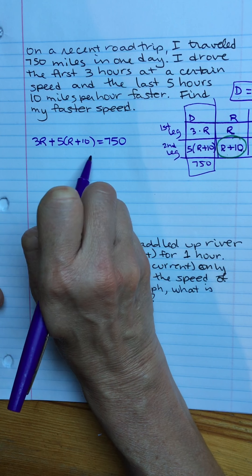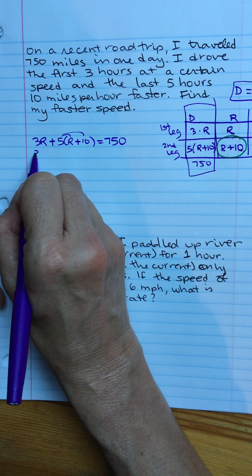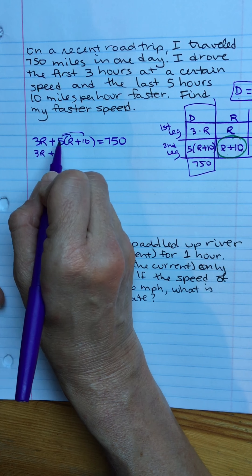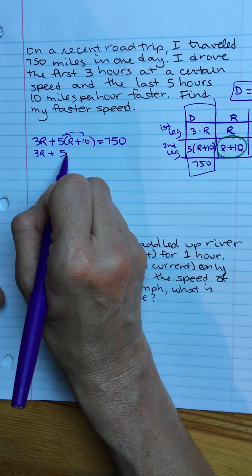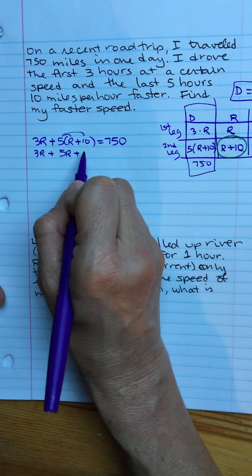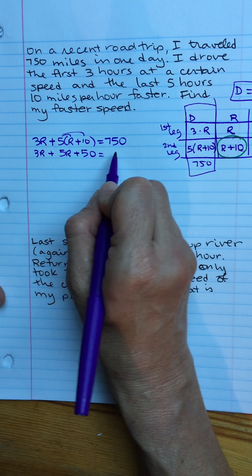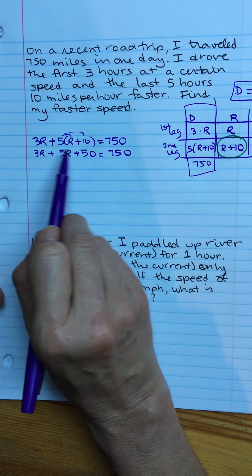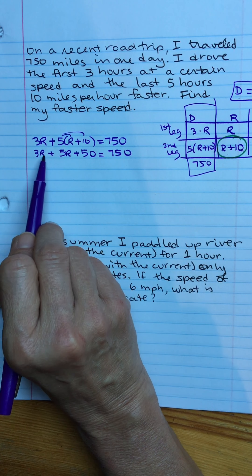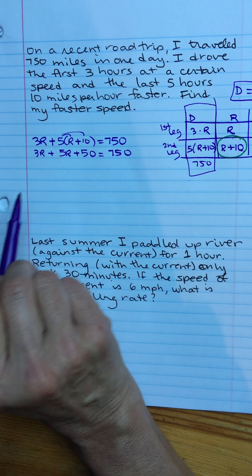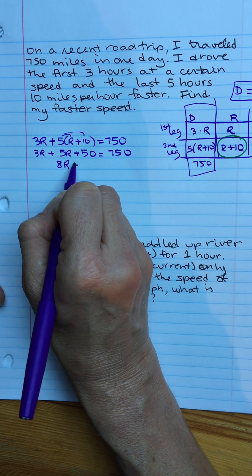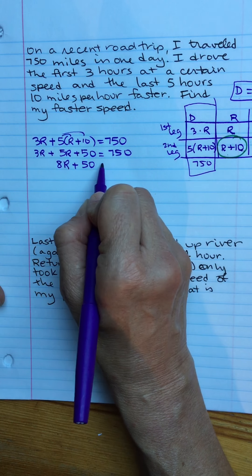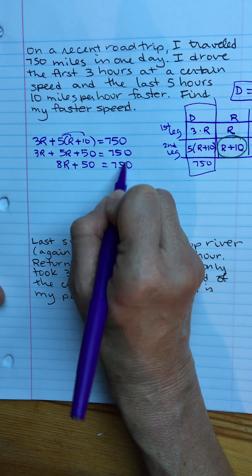We're going to solve that. Get rid of your parentheses first, so distribute the five. Three R's just hanging out waiting. So five times R, just five R. Five times 10, 50 equals 750. Then we combine like terms on each individual side. So here on my left I have three R plus five R, so that'll make 8R plus 50 equals 750.